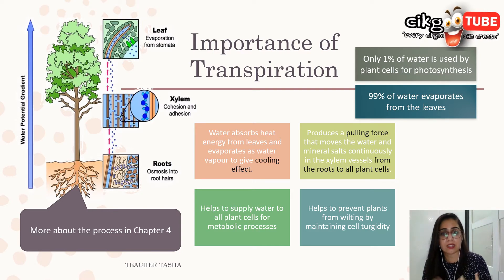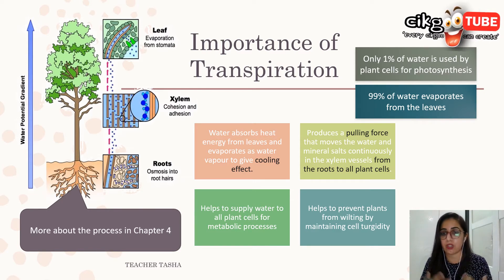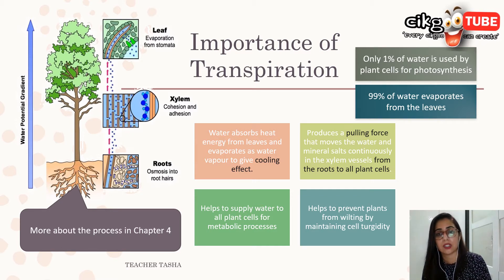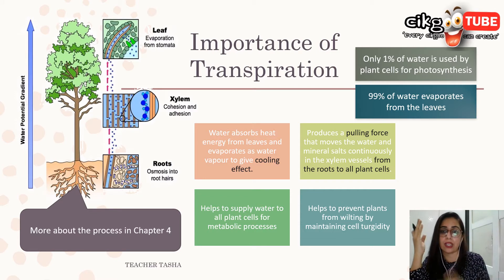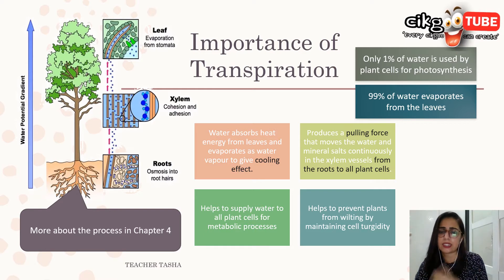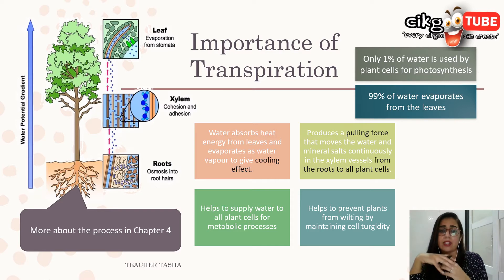Water absorbs heat energy from the leaves, and when it evaporates it gives a cooling effect, maintaining the temperature of the plant. Transpiration also produces a pulling force that moves water and mineral salts up through the xylem vessels from the roots to the plant cells, preventing the plant from wilting and maintaining cell turgidity so the plant stays upright.